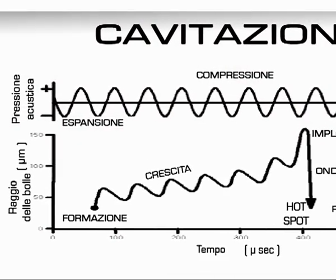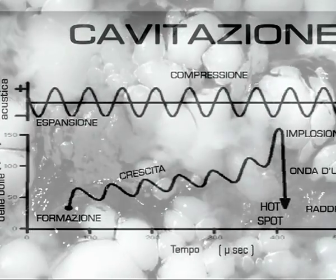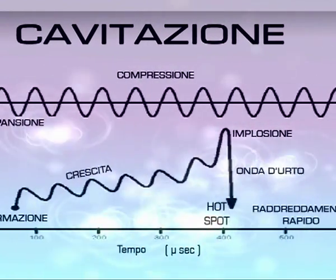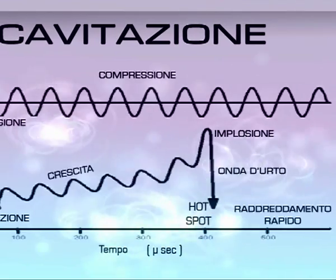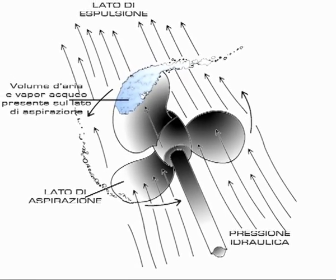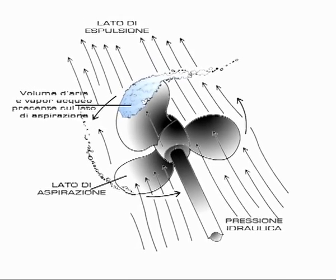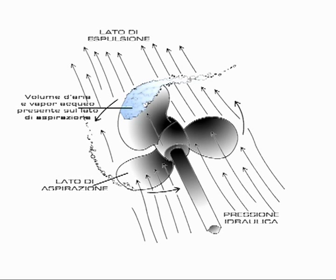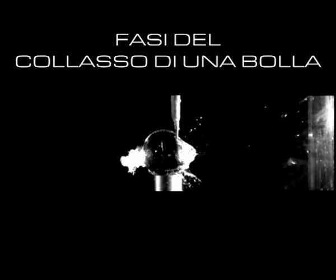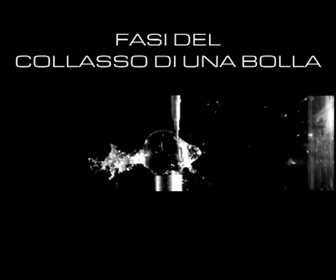Cosa è la cavitazione? Le bolle di gas, disciolte nei liquidi e sottoposte a pressioni sufficienti a comprometterne l'equilibrio interno, implodono. Le pale dell'elica di una nave presentano infatti una serie di abrasioni caratteristiche, provocate proprio dall'implosione di queste microbolle in prossimità del metallo. La pressione esercitata dal movimento dell'elica è quindi sufficiente a innescare il fenomeno. Anche se in uno spazio e in un tempo così minimi, le microimplosioni concentravano una quantità di energia impressionante.